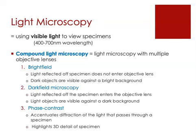The compound light microscope is simply a microscope that uses visible light and has multiple objective lenses available. The objective lenses each produce a different level of magnification of the specimen that's being examined.